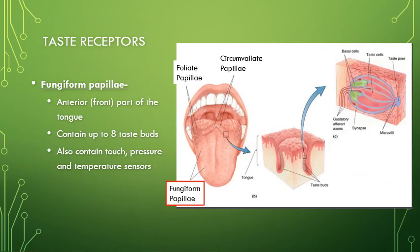The anatomy of taste receptors is important. There are three different areas on the tongue. First, the fungiform papillae are on the anterior or front part of the tongue, and each taste pore here can contain up to eight different taste buds. They're also a key location for touch, pressure, and temperature — which is why the front of the tongue tends to be more sensitive to those things.